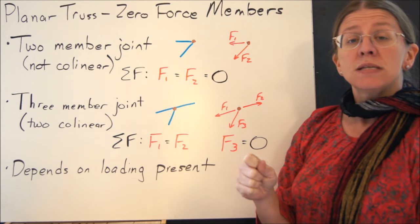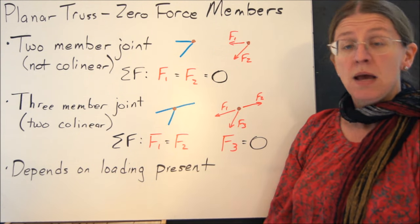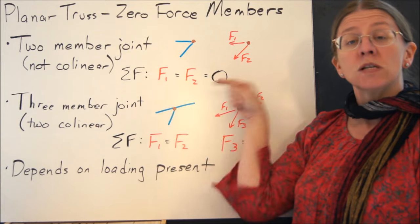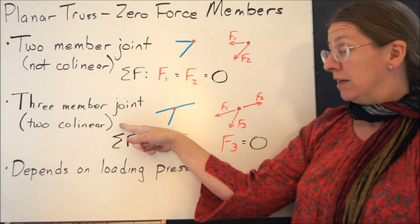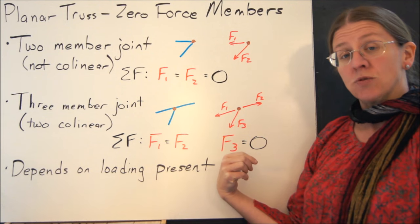The other way that you can do this is with three members coming into a joint like this, where two of them are collinear and the other one isn't. As soon as you do that, you can sum the forces along the line that two of them are on. And the third one, then, you see has to be actually equal to zero.